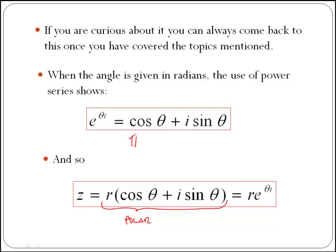Therefore, this identity here, which only works if theta is given in radians, remember that, allows us to go from the polar form to the exponential form.